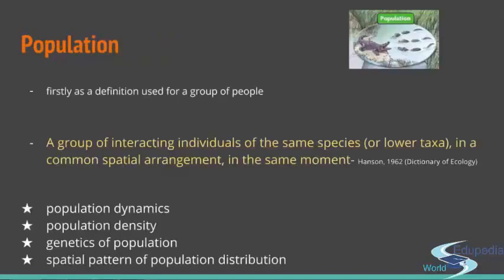Next is population. You can see the tiny pictures in the upper right corner. Population is easy to understand: it is a group of individuals of the same species, but what is important is that they live at the same time and in the same area. So it is defined like 'deer population in Russian tundra in the last decade' — that would be a proper definition of a population. Originally, the name population was used only for people, but since you can use it for a group of one species, Homo sapiens, it's logical it can be used for any other species.